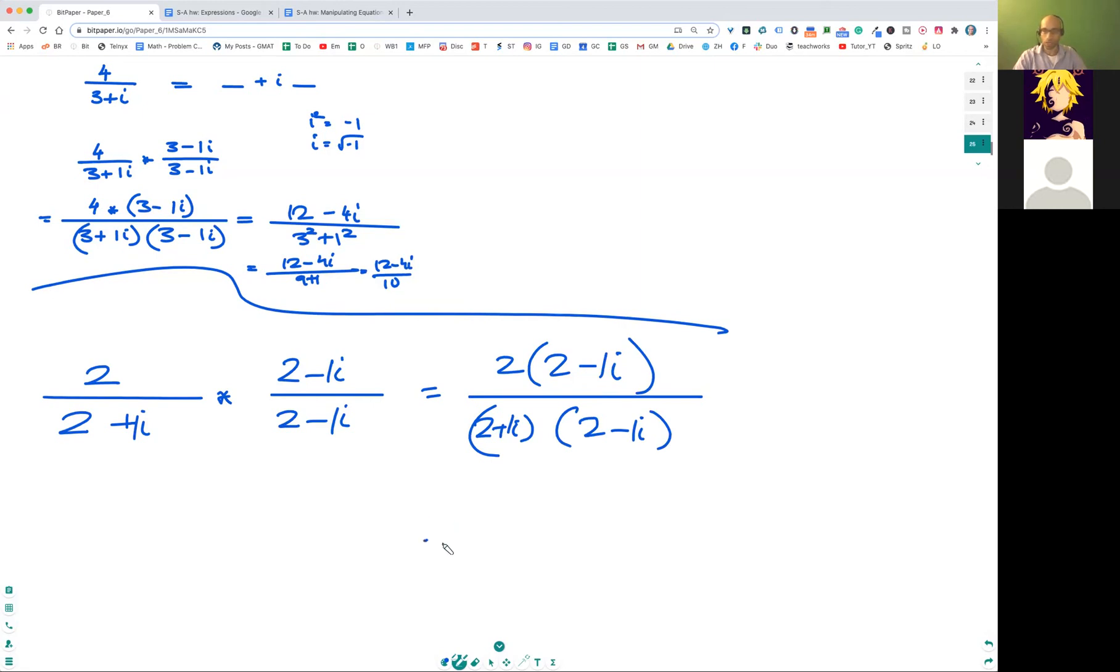So what's gonna happen now is you are gonna have this times this which is 2 squared. Remember, that's just a formula: 2 squared plus 1 squared. And at the top, it's going to be 4 minus 2i. So it becomes (4 minus 2i) over (2 squared plus 1), which is five. So that's it. Nicely done, those of you who did it.